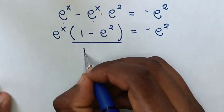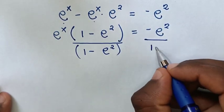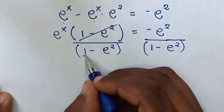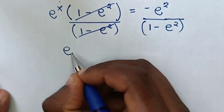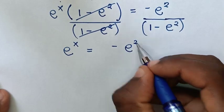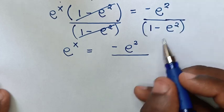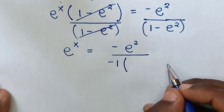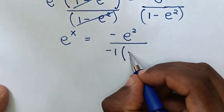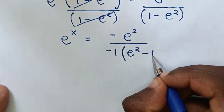We divide both sides by 1 minus e power of 2. The bracket cancels, leaving e power of x equal to negative e power of 2 over 1 minus e power of 2. To remove the negative, we factor out negative 1 from the denominator: negative e power of 2 divided by negative 1 is e power of 2, and 1 divided by negative 1 is negative 1.